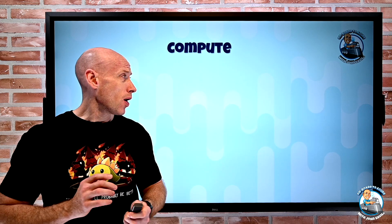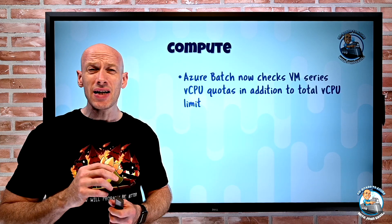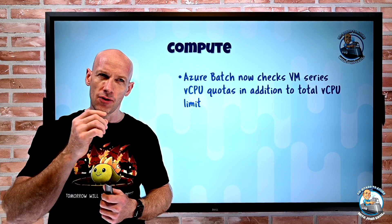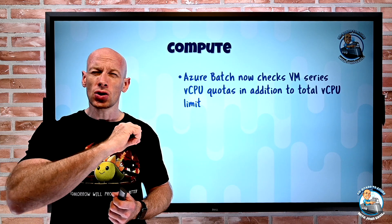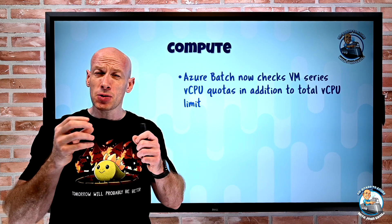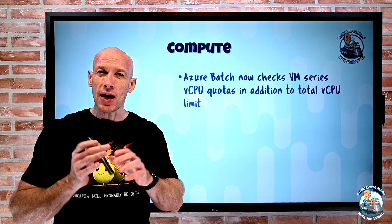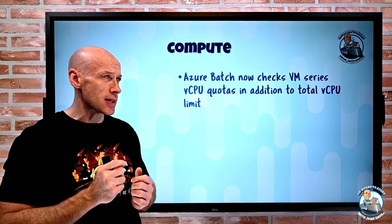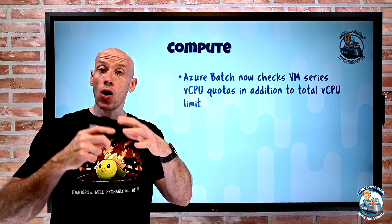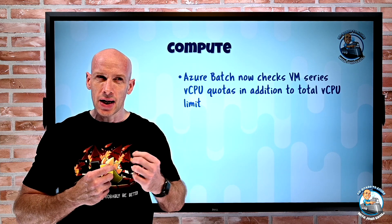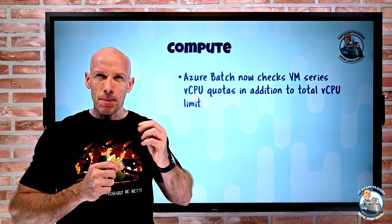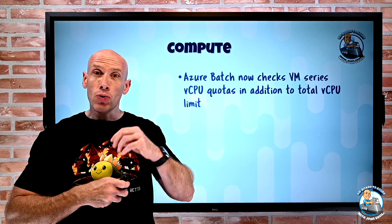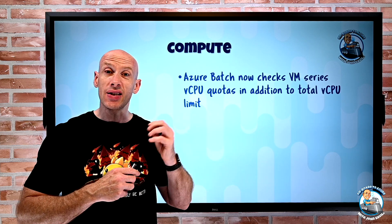On to what's new — again very quiet. On the compute side, really just a change to how Azure Batch works in terms of your quotas. Before, it would ignore any VM-specific quota and just look to the overall quota for your subscription. They've now changed this so that in addition to the overall quota you have for virtual CPUs, as you deploy your Azure Batch and pick the specific VM SKU, it will check that set of quotas as well.